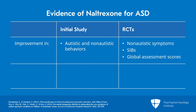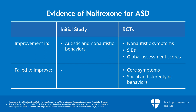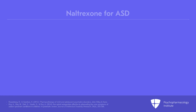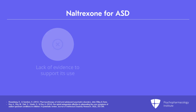However, in these same studies, naltrexone failed to improve the core symptoms of autism and had no significant effect on social and stereotypic behaviors. Due to significant heterogeneity of available trials and small sample sizes, evidence to support the use of naltrexone for treating the core symptoms of autism is still lacking.